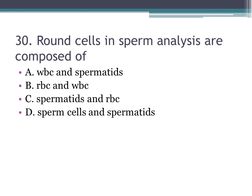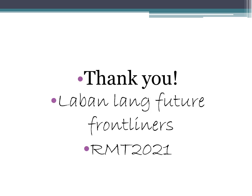Number thirty: round cells in sperm analysis are composed of — A. WBC and spermatids, B. RBC and WBC, C. spermatids and RBC, D. sperm cells and spermatids. Recall January 2021. The correct answer is A, WBC and spermatids. Thank you and good luck, future frontliners RMT 2021.